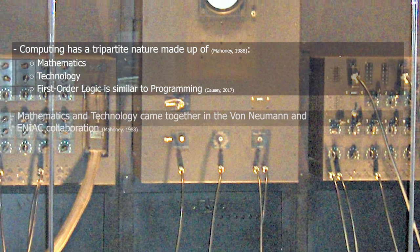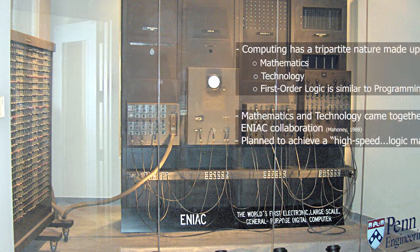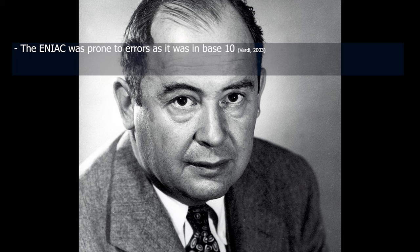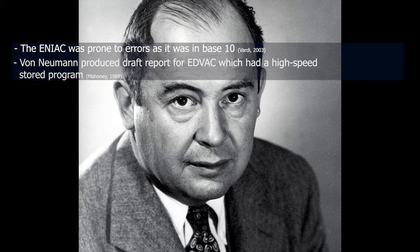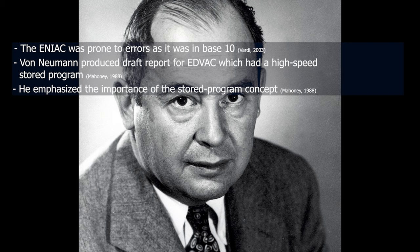For example, mathematics and technology came together in the von Neumann and ENIAC group collaboration to achieve a high-speed logic machine. However, the ENIAC was prone to errors, so von Neumann produced a draft report for the EDVAC, which had a high-speed stored program concept. He emphasized its importance, suggesting it is a key factor for computing as it increased speed and efficiency.